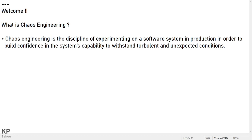That definition is quite complex, so let me simplify it. If you are a site reliability engineer, a network admin, or working in some IT infrastructure environment, chaos engineering is all about how resilient and reliable your software is. Chaos means some kind of disorder or confusion.